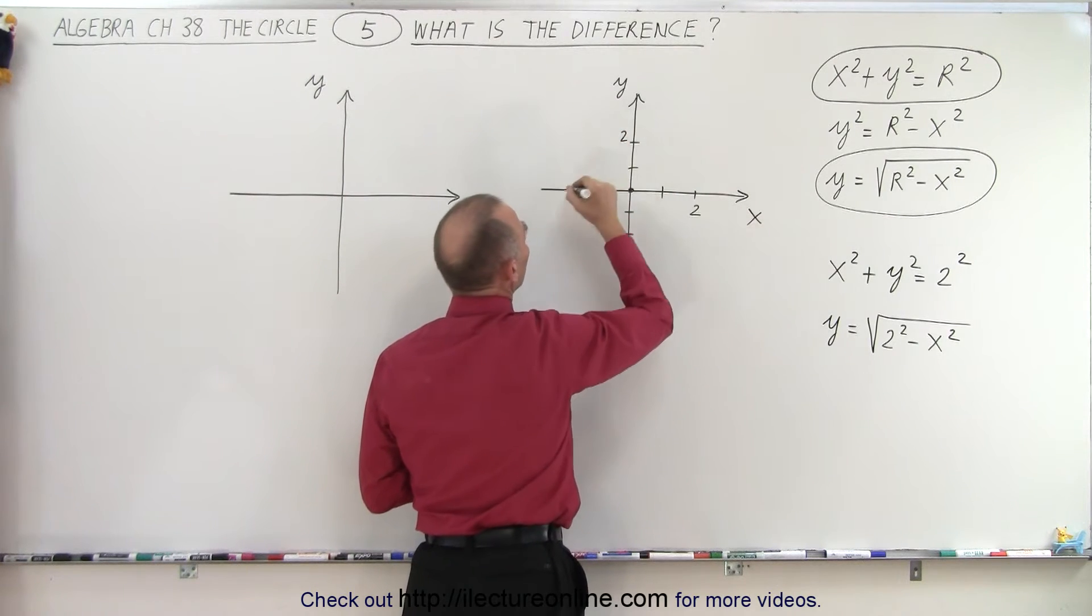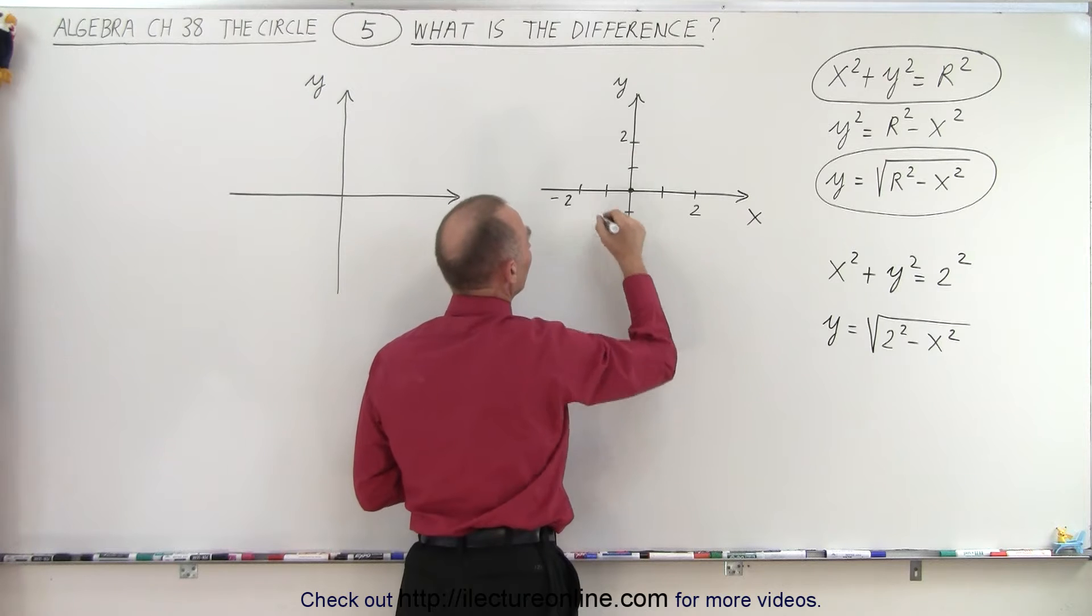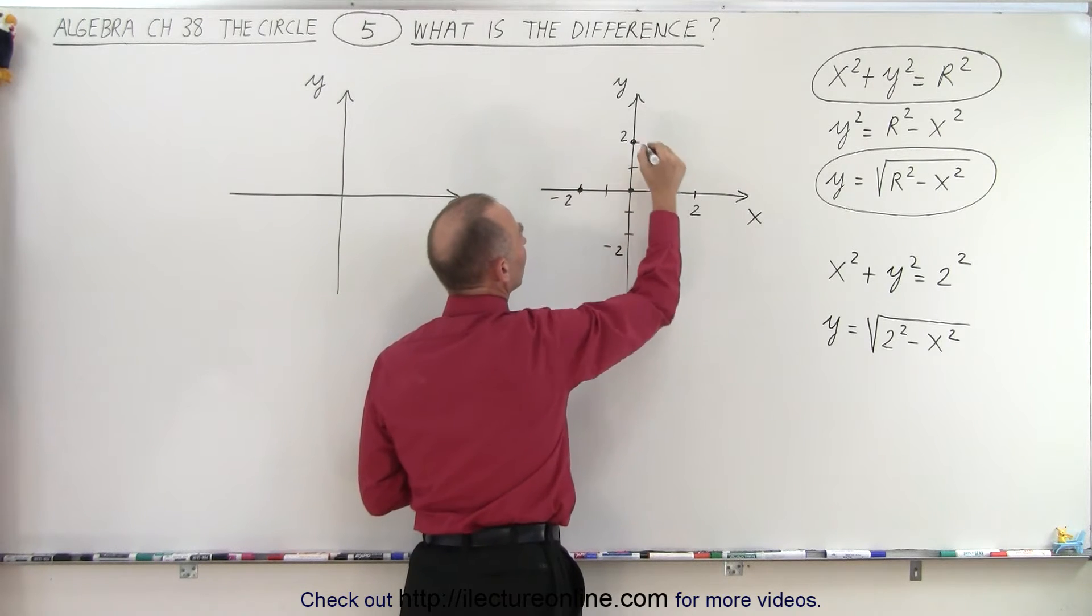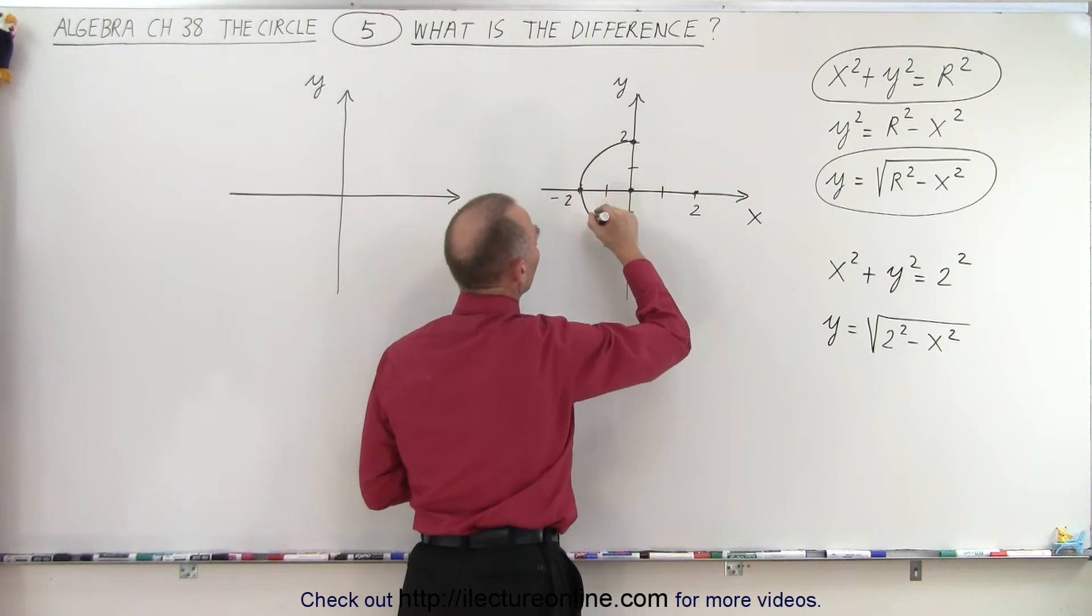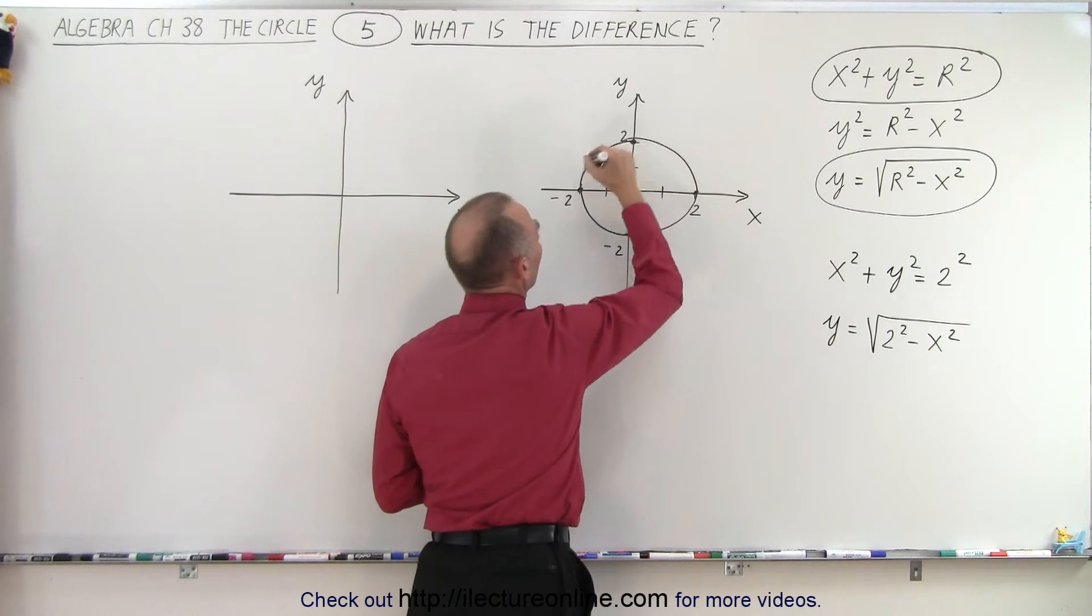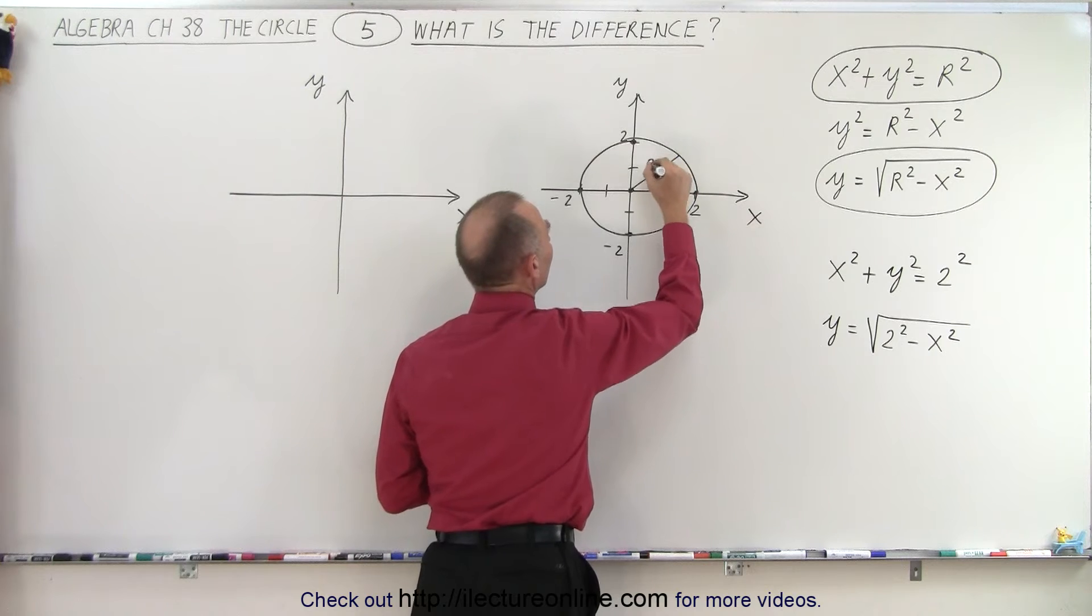So this is 2, 2, negative 2, and negative 2. We put the four points down. We know that those points are on the edge of the circle. Then we connect them. And there we go, a small circle of radius 2.